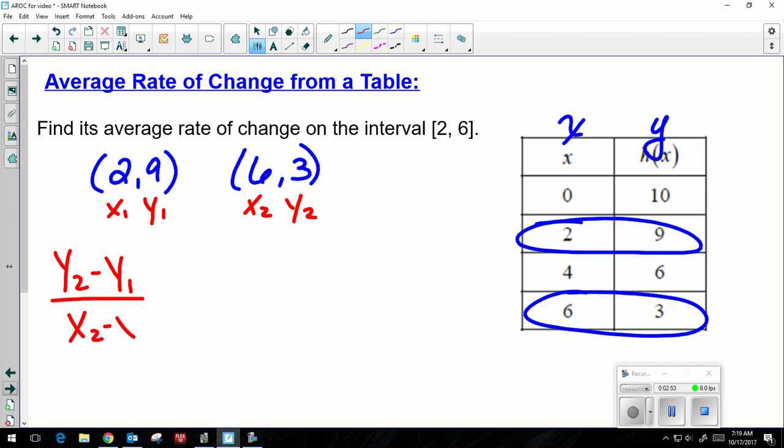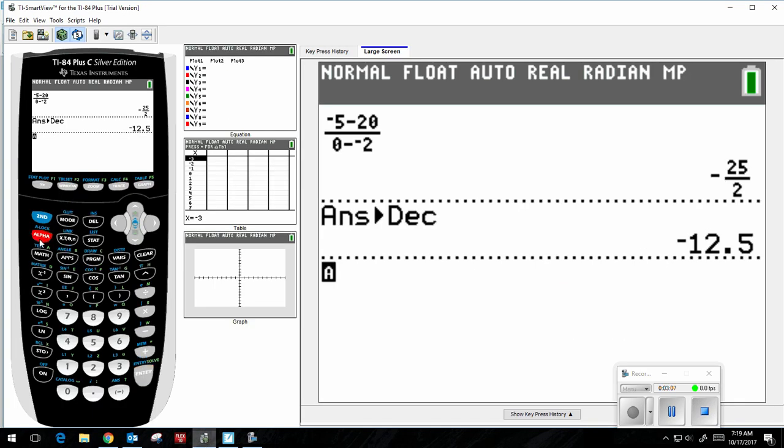So here's my formula once again. So I have 3 minus 9 over 6 minus 2. Go to my calculator. Alpha, y equals, enter, 3 minus 9, hit my down arrow, 6 minus 2.